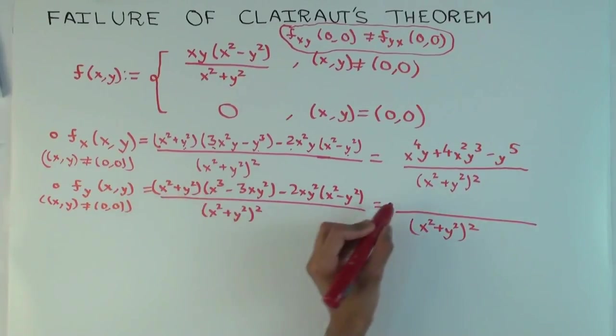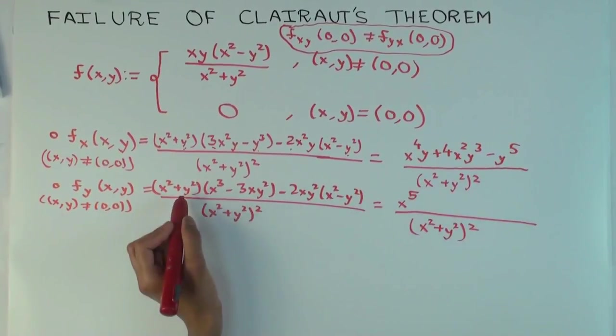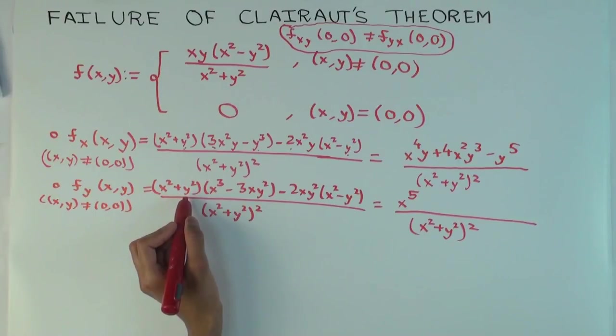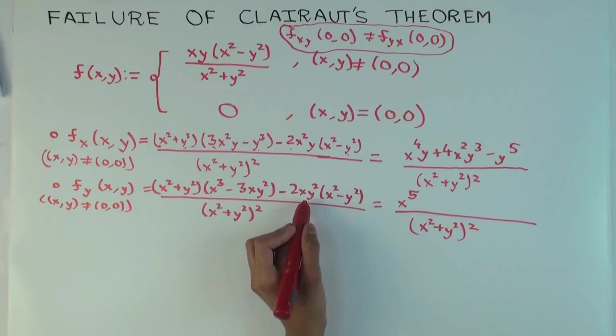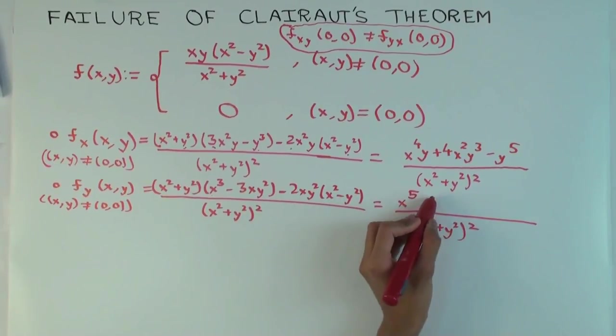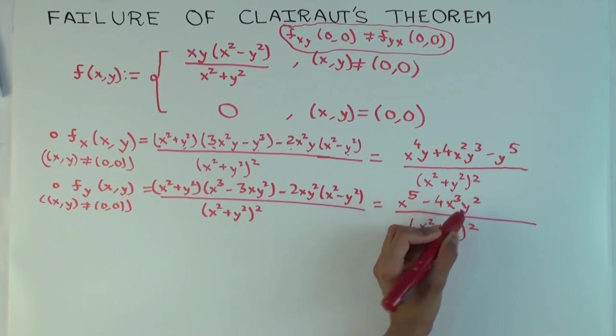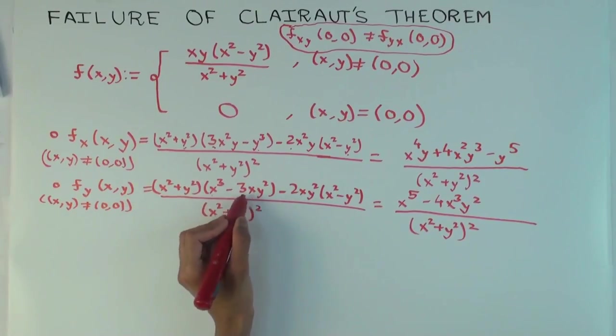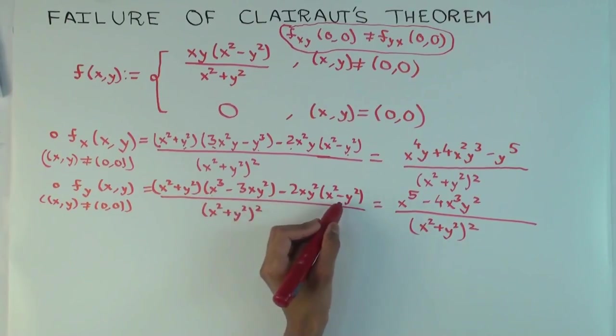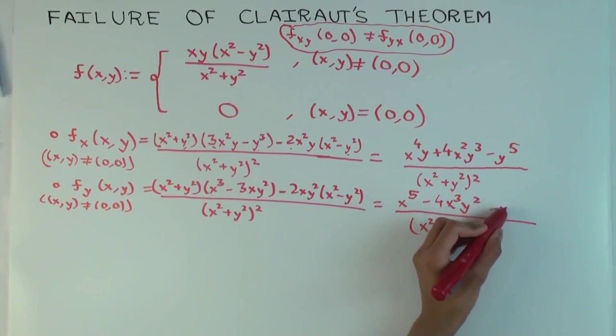So, in both of these, we are using the quotient rule for differentiation. Let's get here. So, you'll have an x to the 5. That, there's only one term here. Then, you have x cubed y squared. So, you have x cubed y squared with a plus 1, minus 3, and a minus 2. So, that's a minus 4. And, x y to the 4, you'll get minus 3 plus 2. So, you get minus 1.